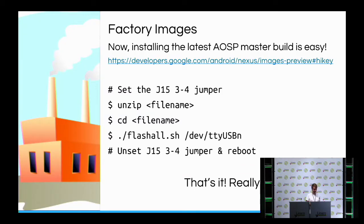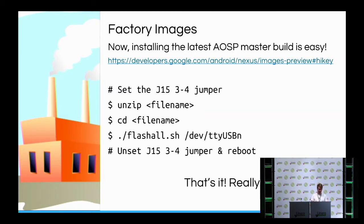Factory images: one of the problems over the last six months was that if you wanted to create images for HiKey, you had to sync the AOSP source — which depending on your connection could take hours to days — and then spend a lot of time building to get something to flash. This was a barrier for a lot of people to tinker with the latest releases. Now we have factory images direct from Google. It's as simple as downloading the zip file, setting the jumper on HiKey for recovery mode, running the FlashAll script, pulling off the jumper, and rebooting.